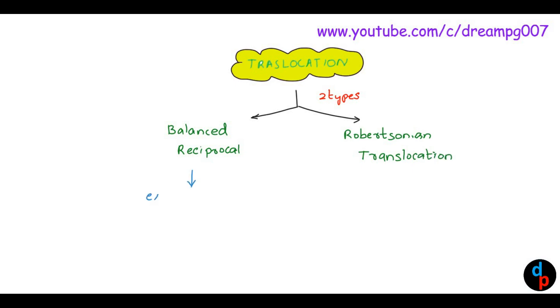In balanced reciprocal translocation, there is exchange of chromosomal materials with no net gain and no net loss.